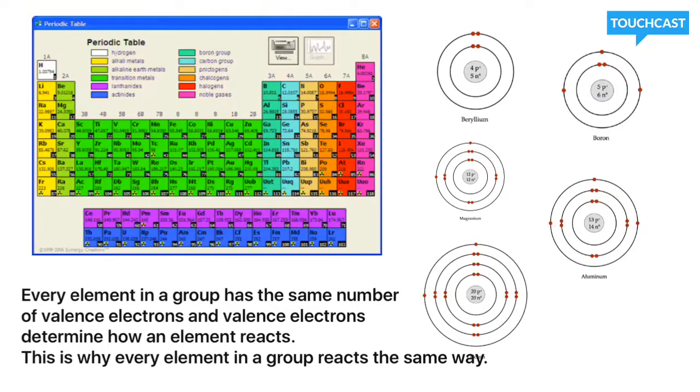Therefore, every element in a group kind of reacts the same way. And this is why they're called families or groups, because they all react the same way.